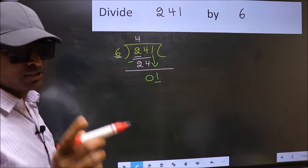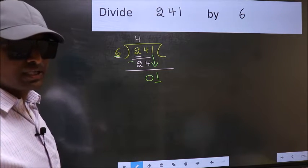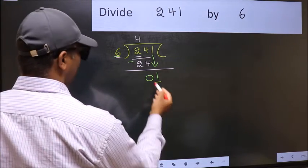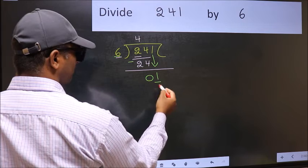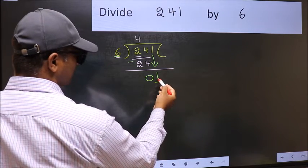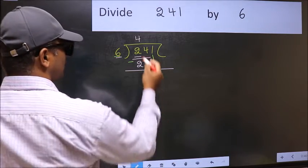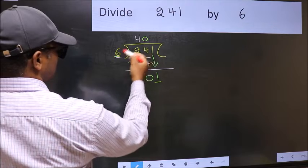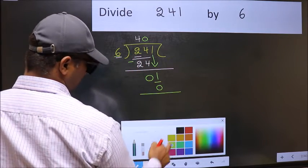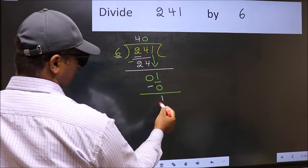Instead, what you should think of doing is: what number should we write here? If I take 1, we will get 6 here, but 6 is larger than 1. So what we should do is we should take 0. So 6 into 0 is 0. Now you should subtract 1 minus 0 is 1.